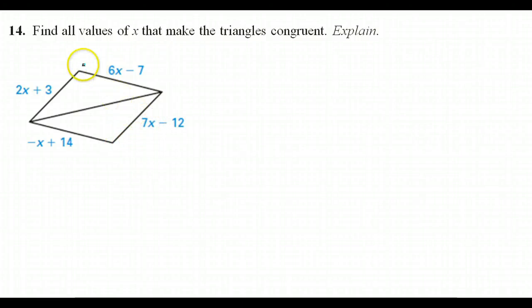Alright, here's number 14. Find all the values that make the triangles congruent. Well, if these triangles are going to be congruent, there are a couple of ways that could happen. Obviously, the shared side here is congruent, so I'm going to go ahead and mark that.